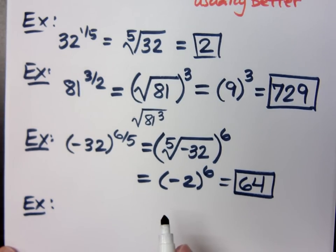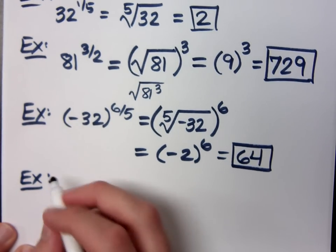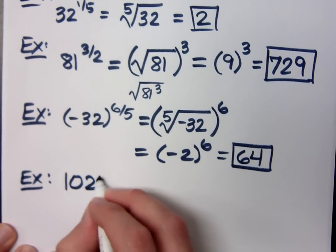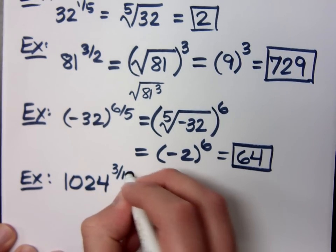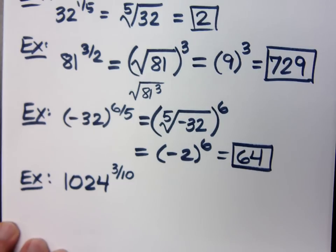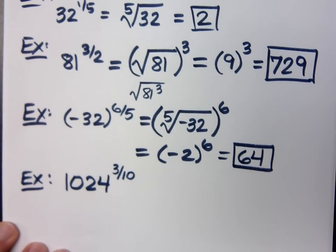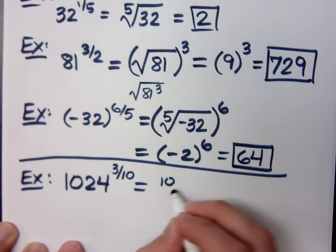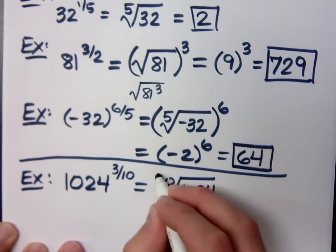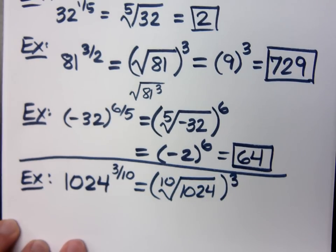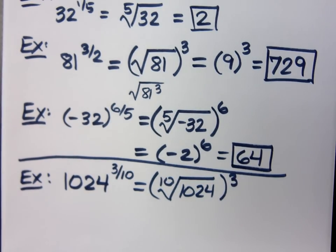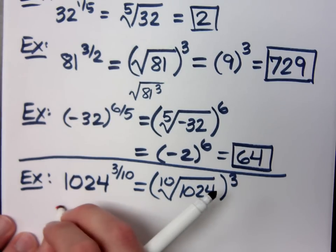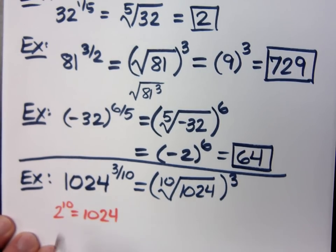Uno mas ejemplo? Get your hands off your calculator. You should be ashamed. This means the 10th root of 1,024 and then raise it to the third power. Of course, if you're watching this video on YouTube, you know that 1,024 is a super cool number because 2 to the 10th is 1,024. That's why it's so awesome.